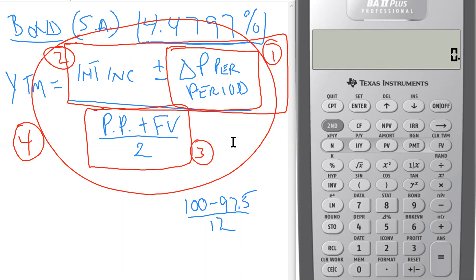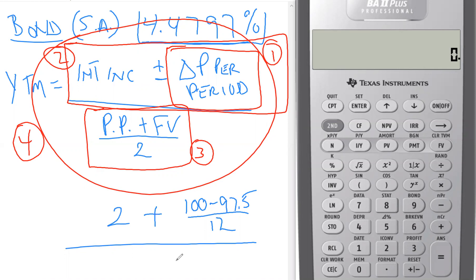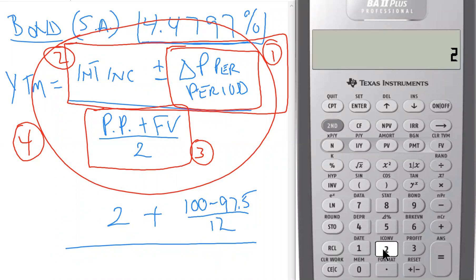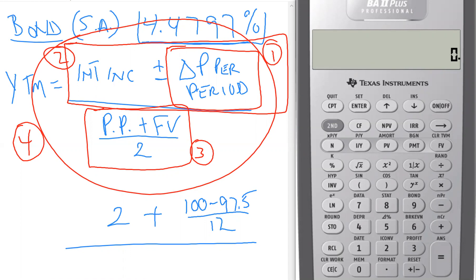Step 2 — adding interest income: we had a $4 annual coupon, but we divide by two for a $2 coupon per period. We recall the stored value from memory register 1 and add $2 to it, giving us the full numerator of 2.208333. We'll store that back in memory register 1.